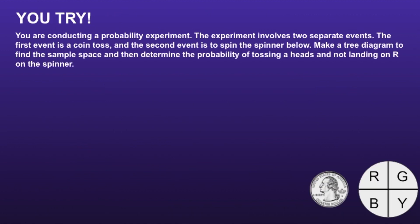Now it's your turn. You are conducting a probability experiment with two separate events. The first event is a coin toss and the second event is to spin the spinner shown. Make a tree diagram to find the sample space, and then determine the probability of tossing heads and not landing on R on the spinner. Pause the video now, draw your tree diagram, and determine the probability. Resume the video when you're ready to check your solution.